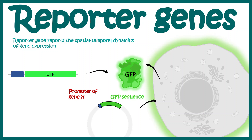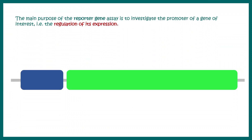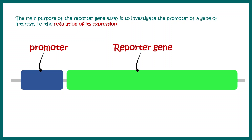In this animated video we'll look at reporter genes, which are genes that can report the spatiotemporal dynamics of gene expression. The main purpose of the reporter gene assay is to investigate the promoter of a gene — whether that particular promoter is active and how it is regulated. We have a gene promoter, for example the promoter of a gene of interest called gene X, and in order to understand how much transcription happens from this promoter, we need a reporter gene to help us visualize the overall rate of transcription. Often the reporter gene is GFP, which is easy to visualize.